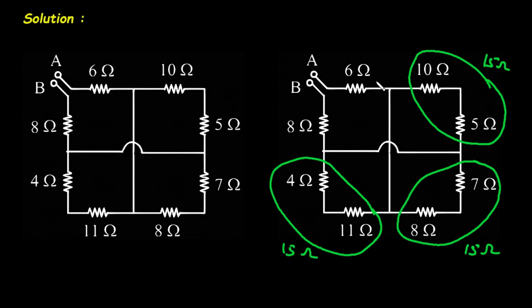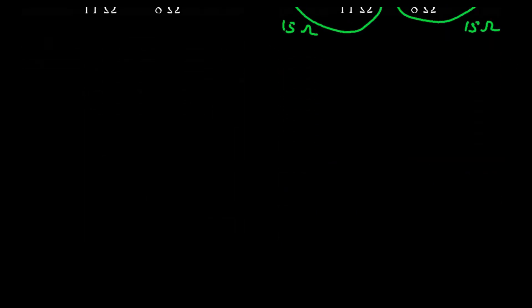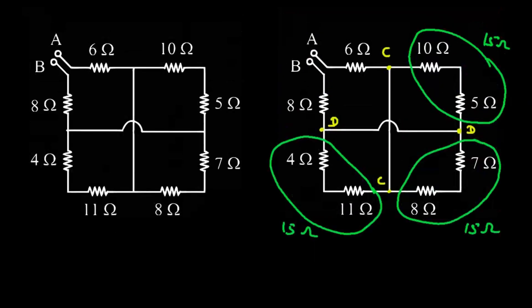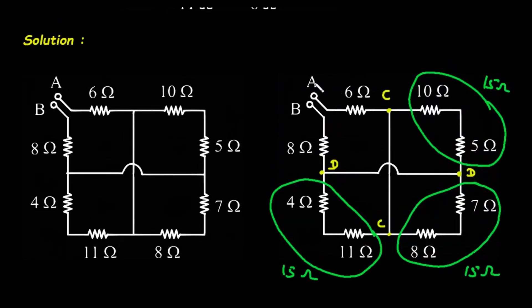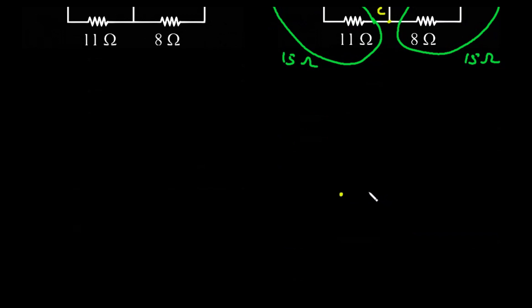Next, let's assume this node as node C and this as node D. They both are the same, so these points are also D and C respectively. Now we can redraw this network. On the right side we will take terminal A and on the left side we will take terminal B. The network will look like this — this is A and this is B.